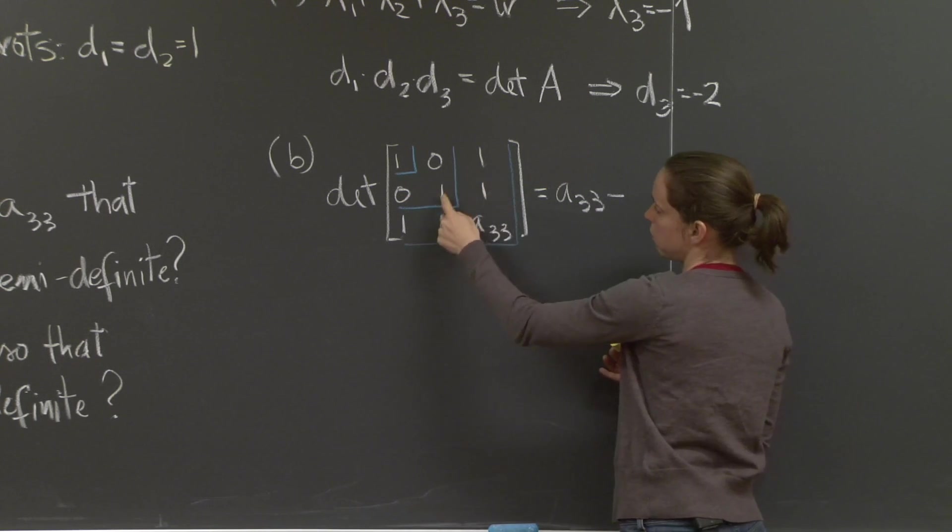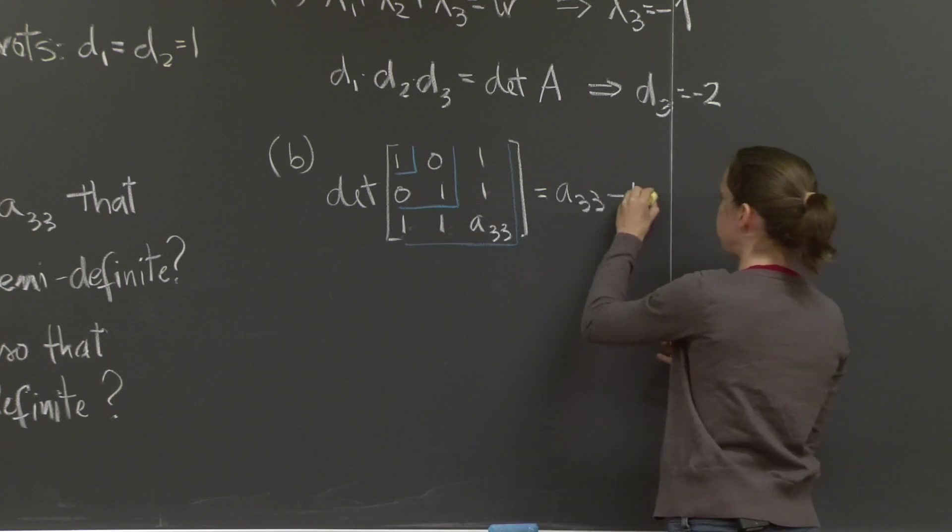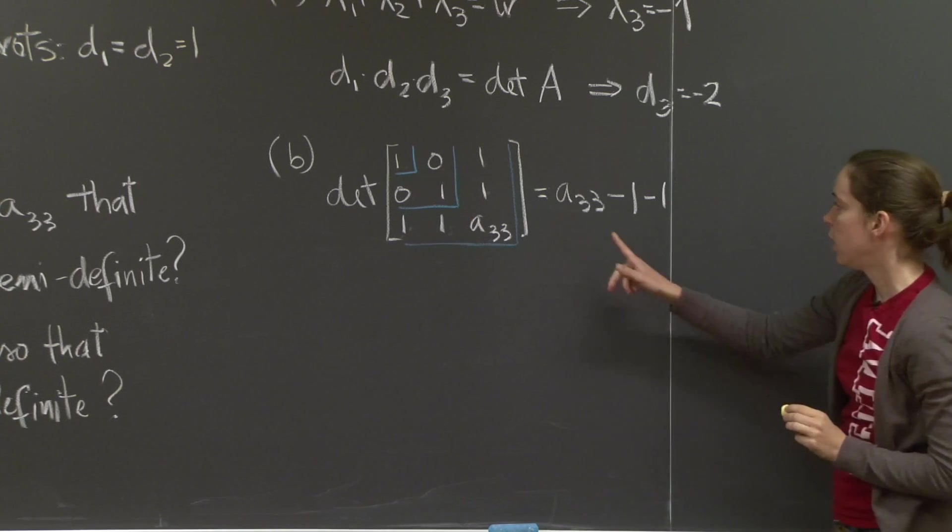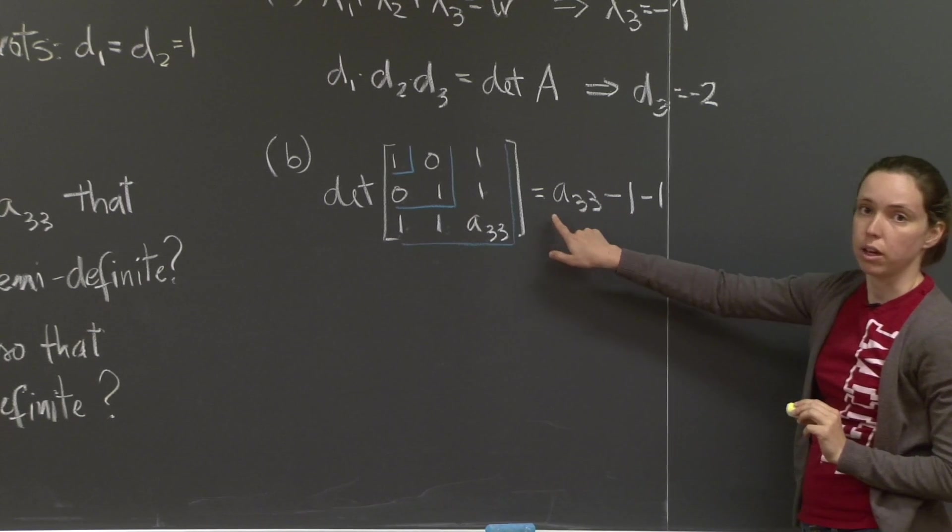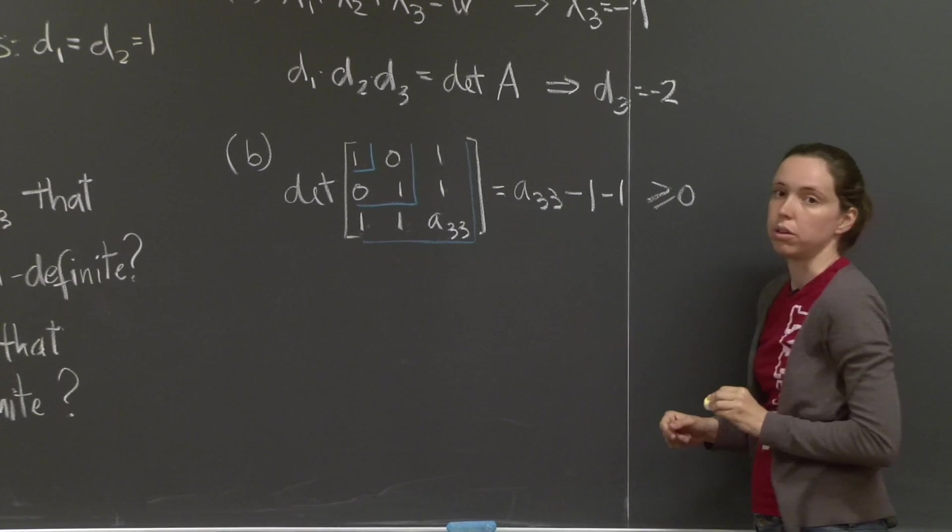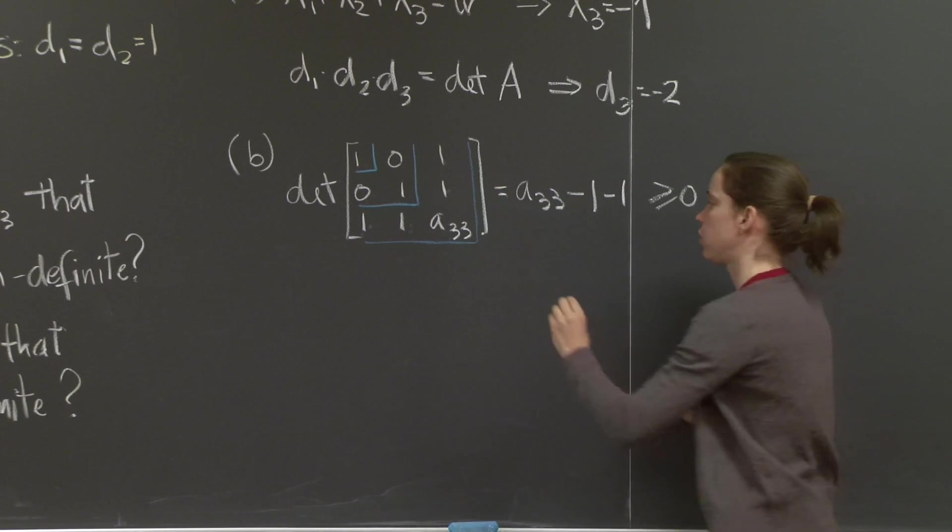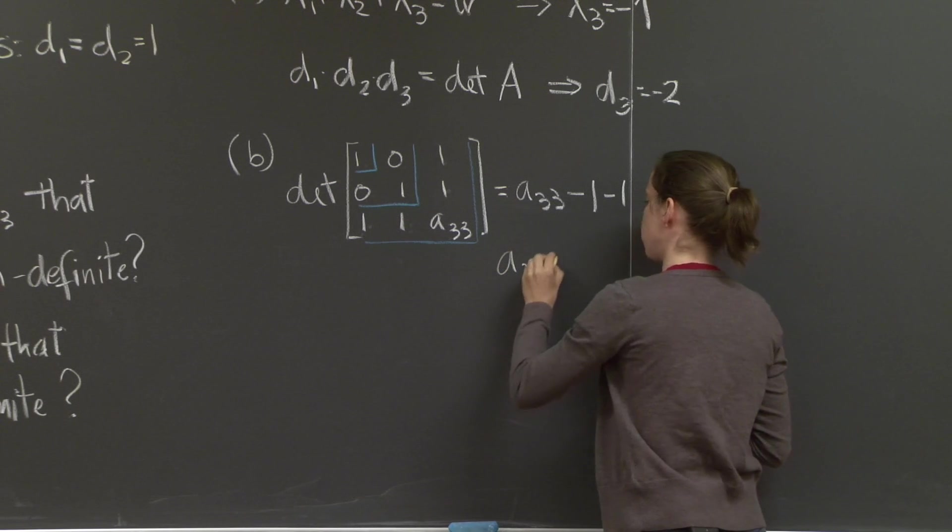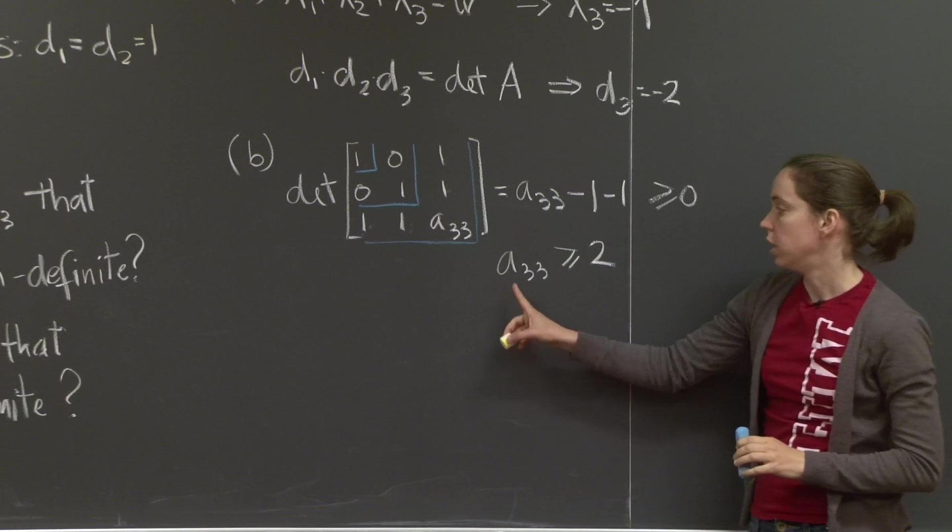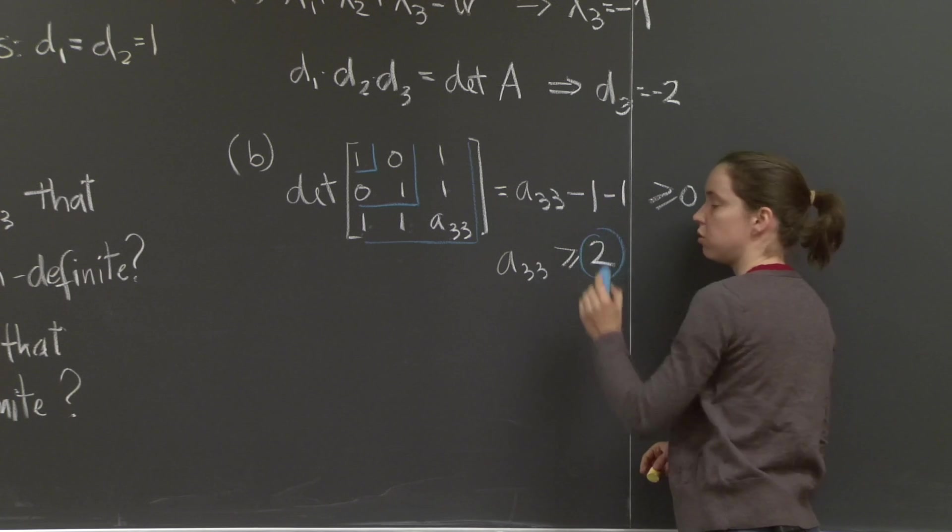minus 1 times 1 times 1, minus 1 times 1 times 1, minus a3,3 times 0 times 0, that's 0. So, this is the determinant, it's A3,3 minus 2, and I want it to be greater than or equal to 0. This will guarantee that the matrix is positive semi-definite. So, A3,3 must be bigger than or equal to 2. The smallest value for A3,3 that will make the matrix positive semi-definite is 2.